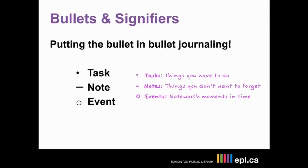Here's a quick guide. In the traditional bullet journaling language as Ryder Carroll created it: the bullet is for tasks — things you have to do. The dash is a note — things you don't want to forget but aren't necessarily things you need to take action on. And then the open circle is actually an event — noteworthy moments in time, things that happened that you don't want to forget, but separate from just a note in that it was actually something that you experienced.